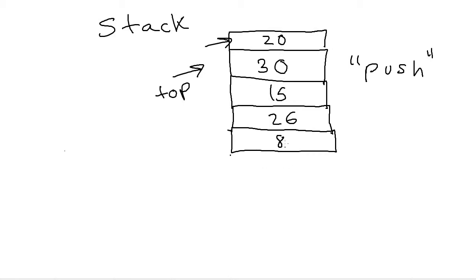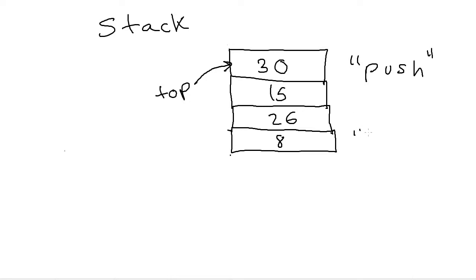If I want to remove an item from the stack, the only thing that can be removed is the 20. I cannot remove the 30, 15, 26, or 8 at all. So removing the 20 leaves the 30 as the new top of the stack. This is called popping — when you take something off of the stack, you're said to pop it off. Adding to the stack is pushing, and taking off the stack is popping.